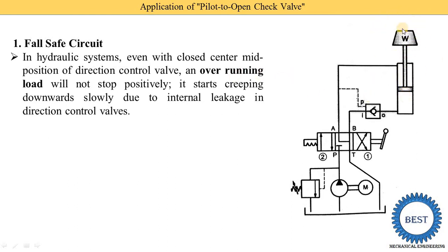This is called an overrunning load. Due to the weight, the piston is trying to move in the downward direction. The oil in the pipe creates pressure on the directional control valve, and some leakage occurs. Due to this leakage, the weight starts to move gradually downward — meaning we are not able to hold the load at the desired position. Suppose we need to stop the machine and sustain it at a certain height — it is not possible due to this internal leakage. That's why a pilot-to-open check valve is placed in the line, so pressure does not directly act on the directional control valve and leakage is avoided.